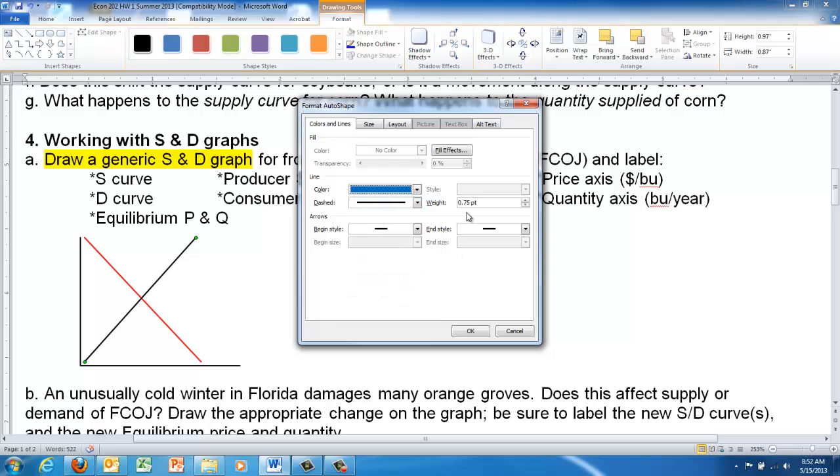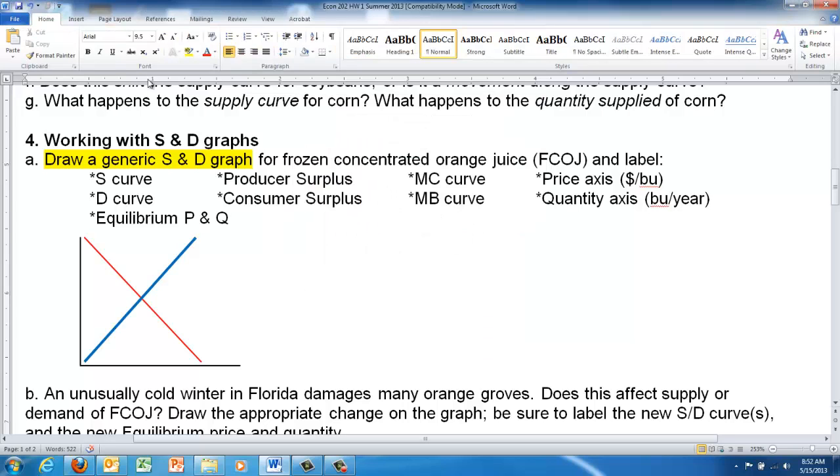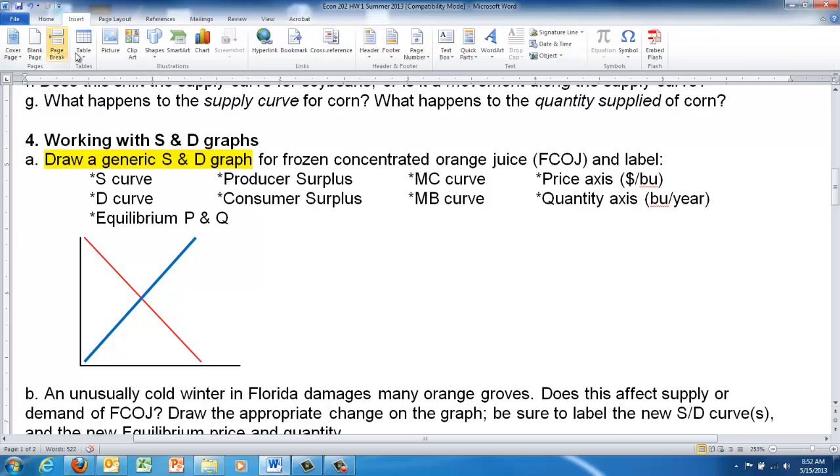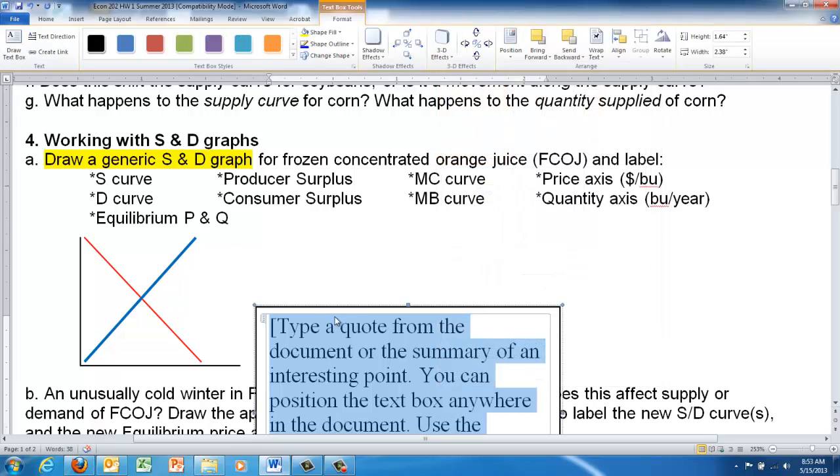And you know what, maybe I want to make this a little bigger so you can see it easier. Let's increase the weight of the line to 1.5. Now as for labeling, what you want to do is go back up to Insert and select Text Box. Select Simple Text Box.